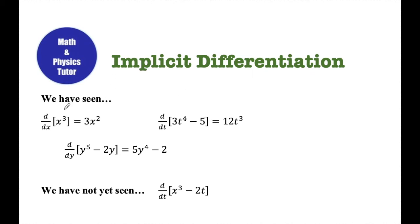So up until now, we've taken the derivative in respect to x of something with only x's. The derivative of this was just 3x squared. Or the derivative of something in respect to t, and there were only t's in the expression. Or a derivative in respect to y, when there's only y in the expression.